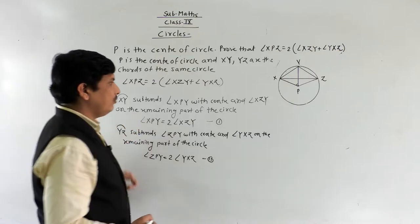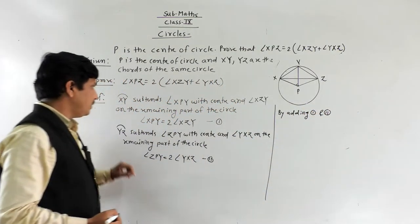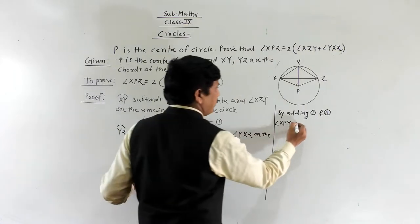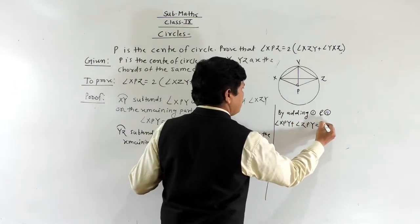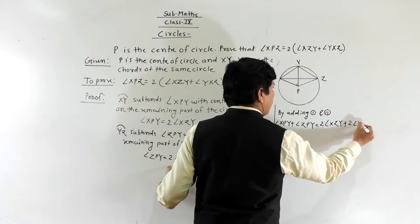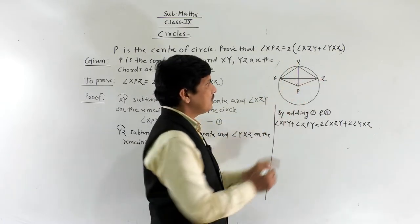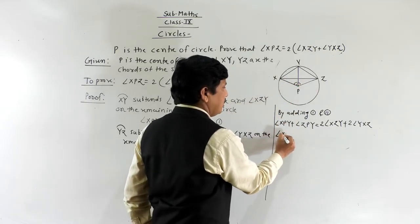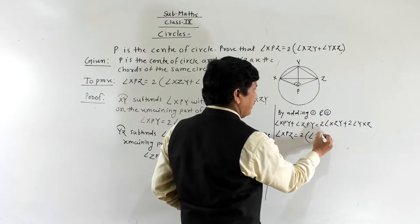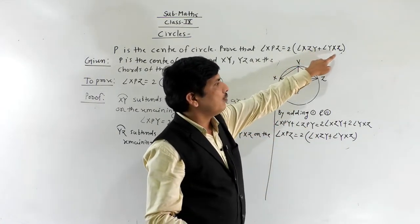By adding the first and second results: angle XPY plus angle ZPY is equal to 2 times angle XZY plus 2 times angle YXZ. Now, angle XPY plus angle ZPY equals angle XPZ. Taking 2 common on the right side gives angle XPZ is equal to 2 times angle XZY plus angle YXZ, which is our target.